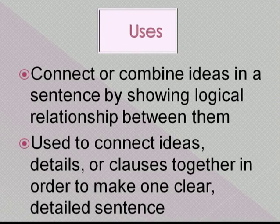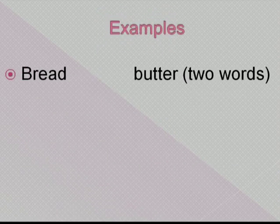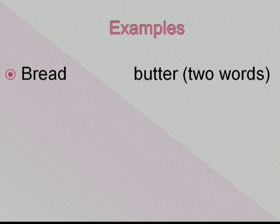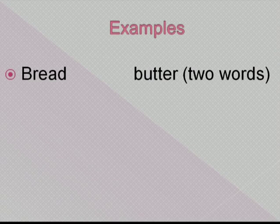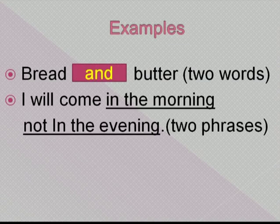Connectors connect or combine ideas in a sentence by showing a logical relationship between them. They are used to connect ideas, details, or clauses together in order to make one clear, detailed sentence. For example, the two words 'bread' and 'butter' are connected with the connector 'and' — bread and butter.